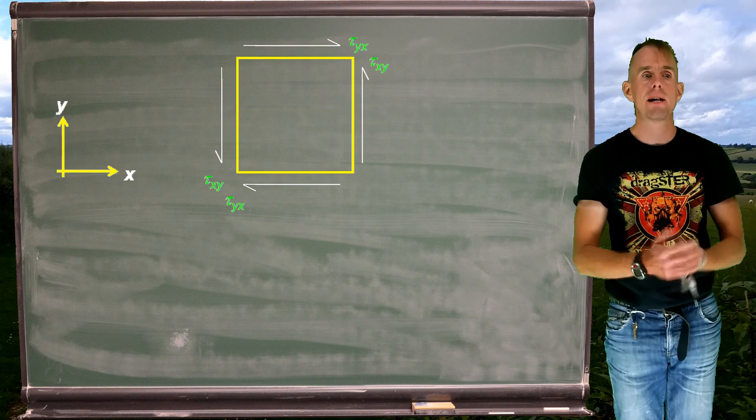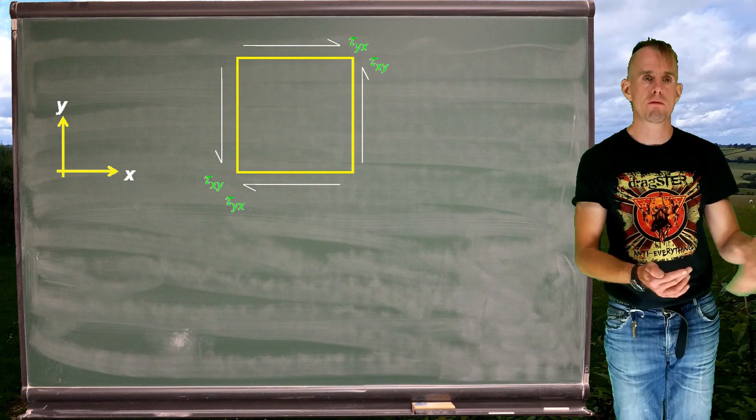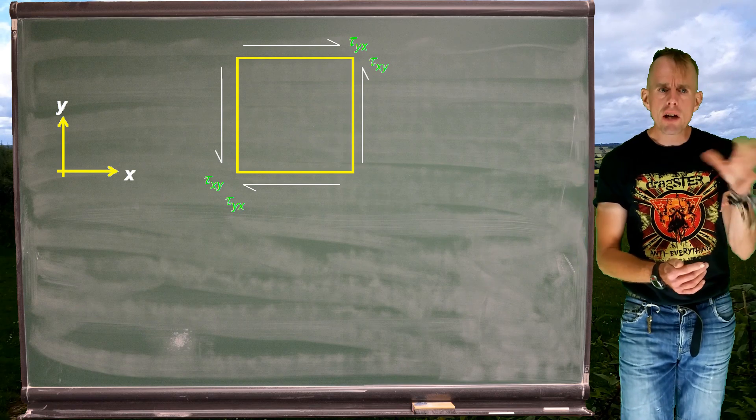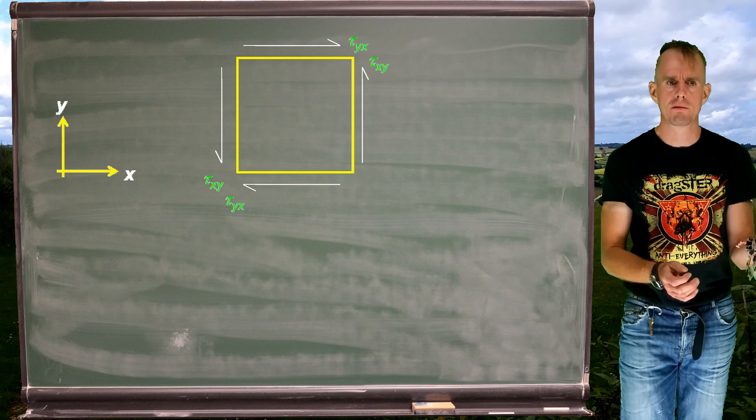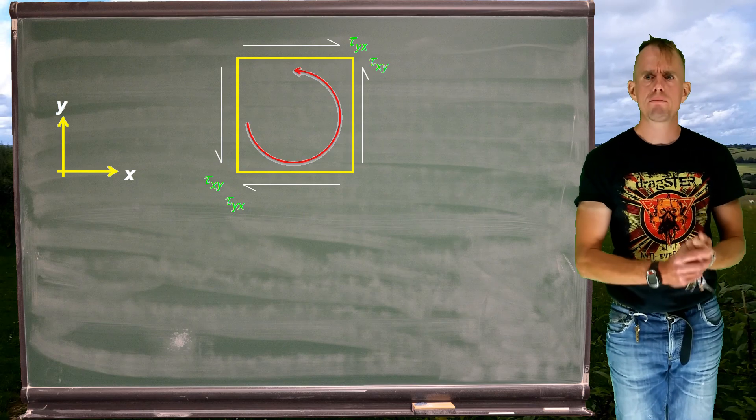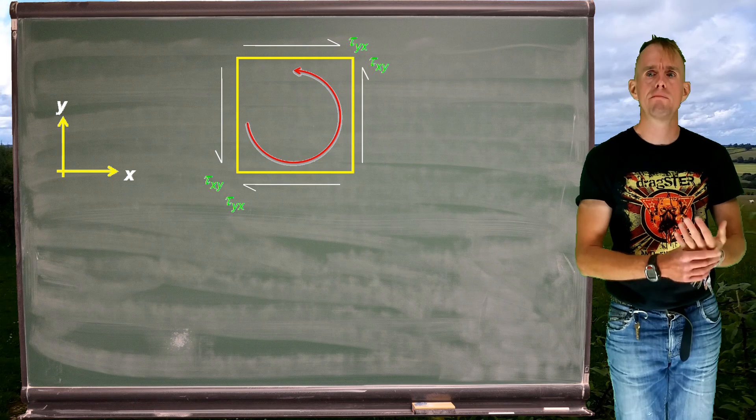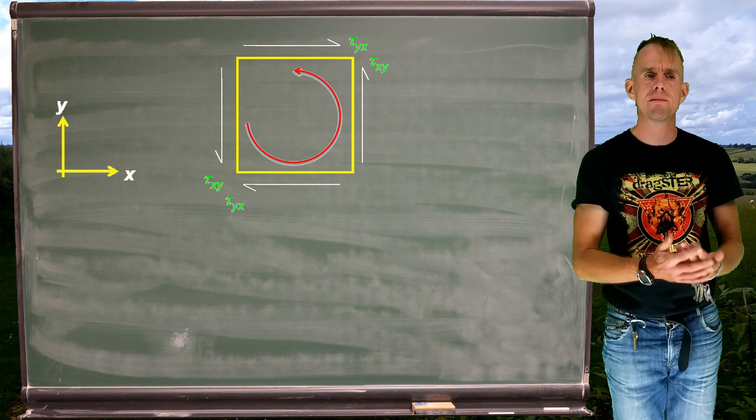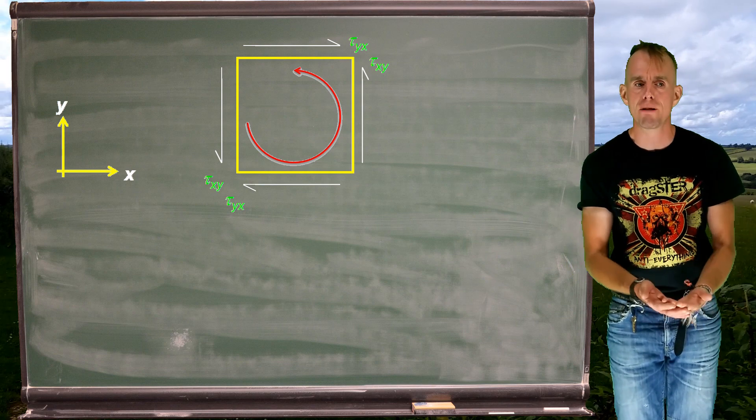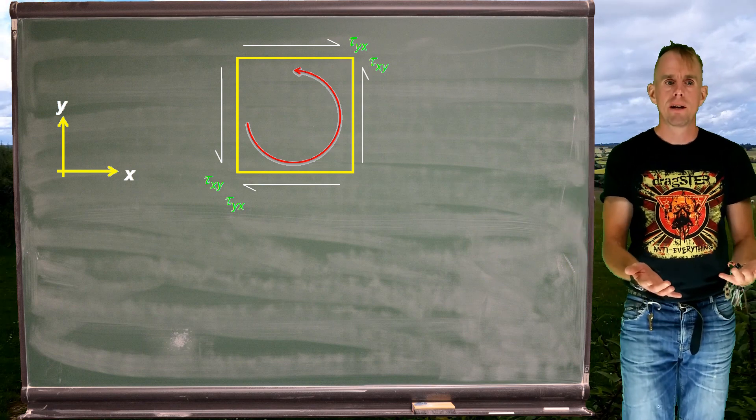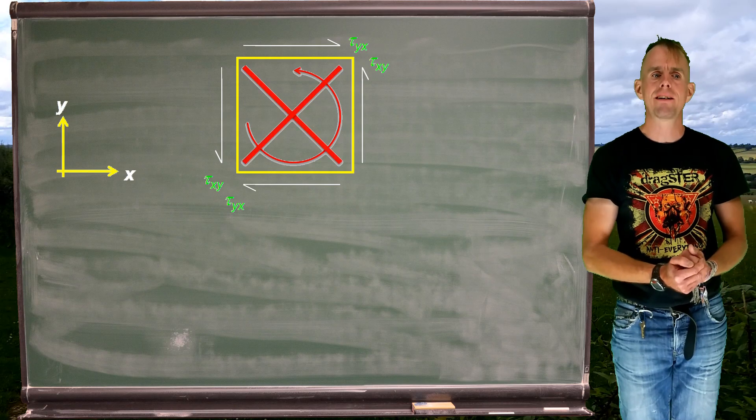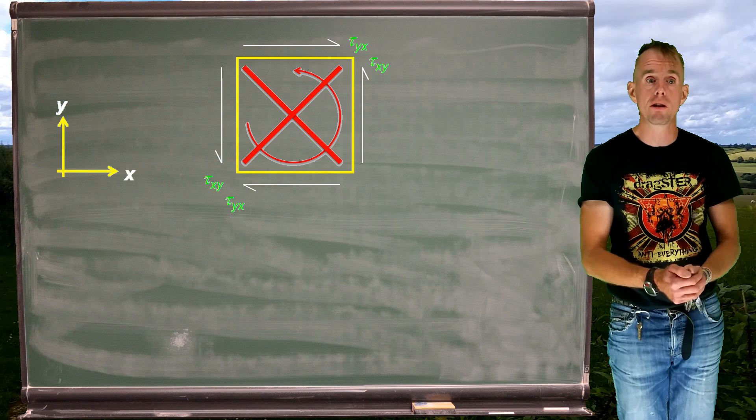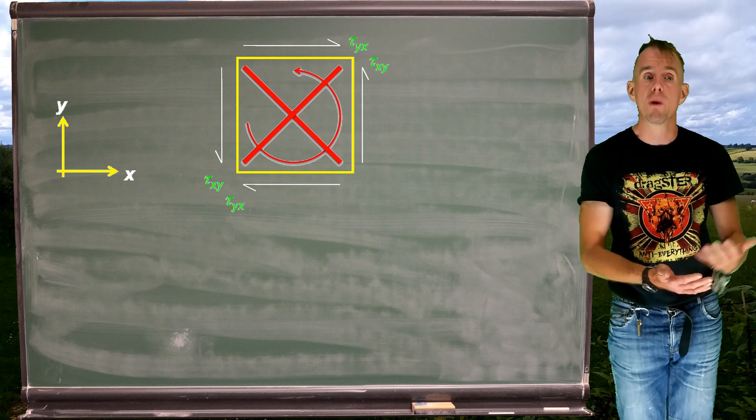So here we have that yx face again, remembering that the normal will be in the z direction. And let's say that these shear stresses here are out of balance. Those out of balance stresses will cause a moment of rotation. Now, if we've made an assumption that the fluid element is in rotational equilibrium, that can't be so. So in that case, these shear stresses have to balance. Otherwise, there'd be a residual moment, which we've assumed is not there.